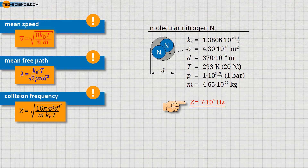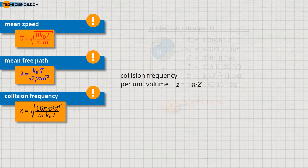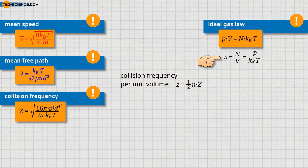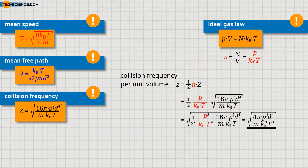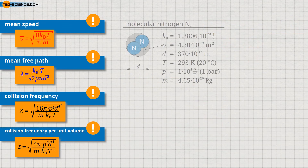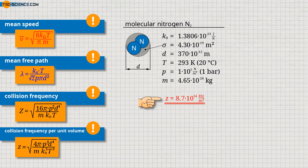To obtain the total number of collisions per unit volume, the number of collisions must be multiplied by the particle density. It must be taken into account that two molecules always collide with each other, so that a factor of one half must be included. The particle density can be expressed by temperature and pressure according to the already derived formula. Using this formula for the particle density and also the formula for the collision frequency, the total number of collisions per unit volume can be determined with the given formula. For nitrogen, a value of 8.7 × 10³⁴ collisions per second per cubic meter is obtained.